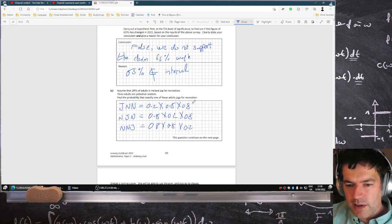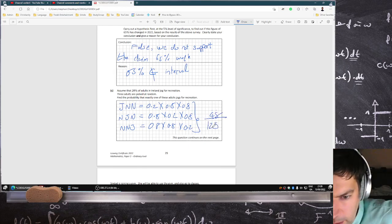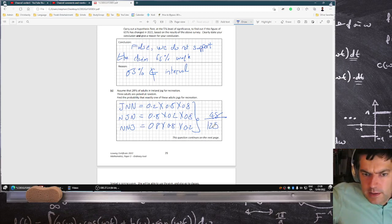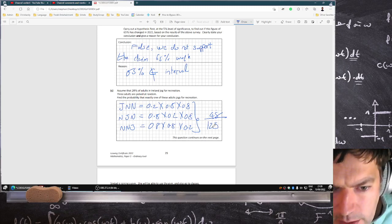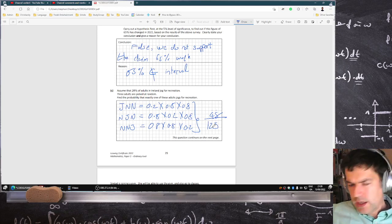So you multiply them out, those three, and add them up. What do you get? 48 over 125, if you add them all up, multiply them out and add them up. Yeah, yeah.